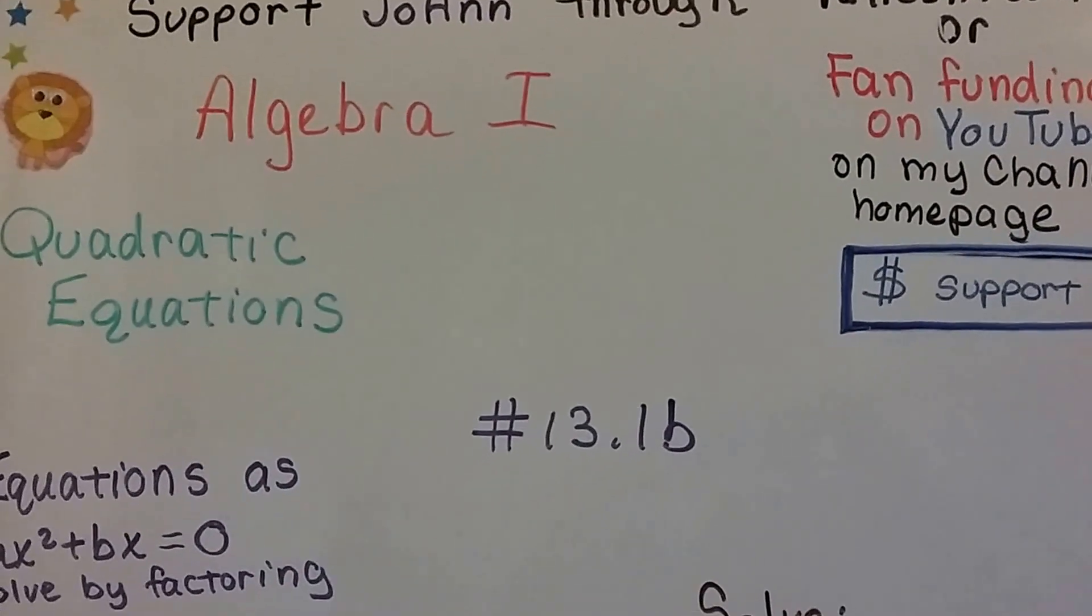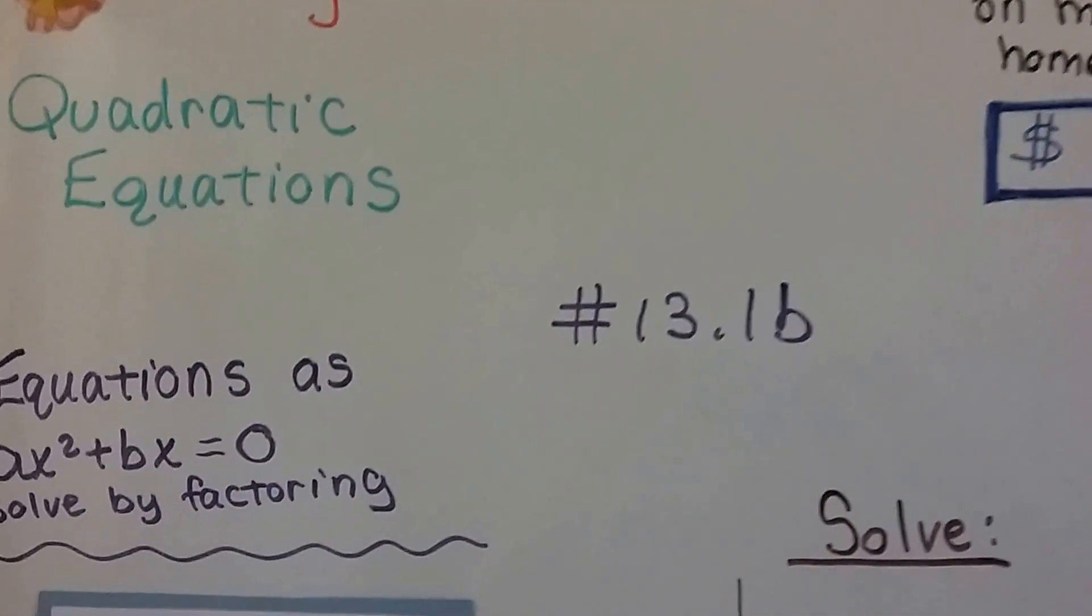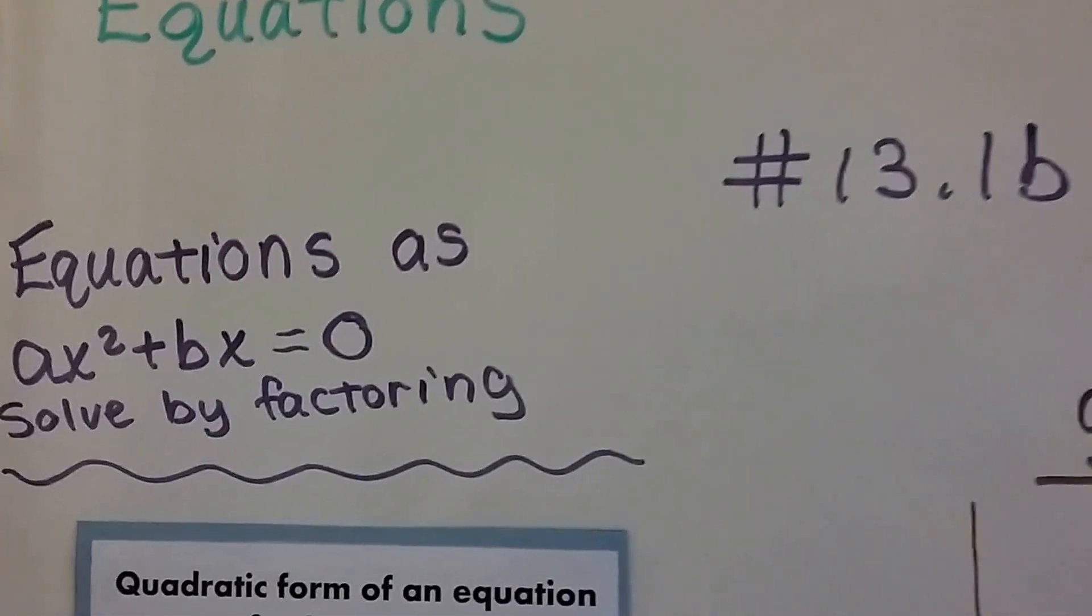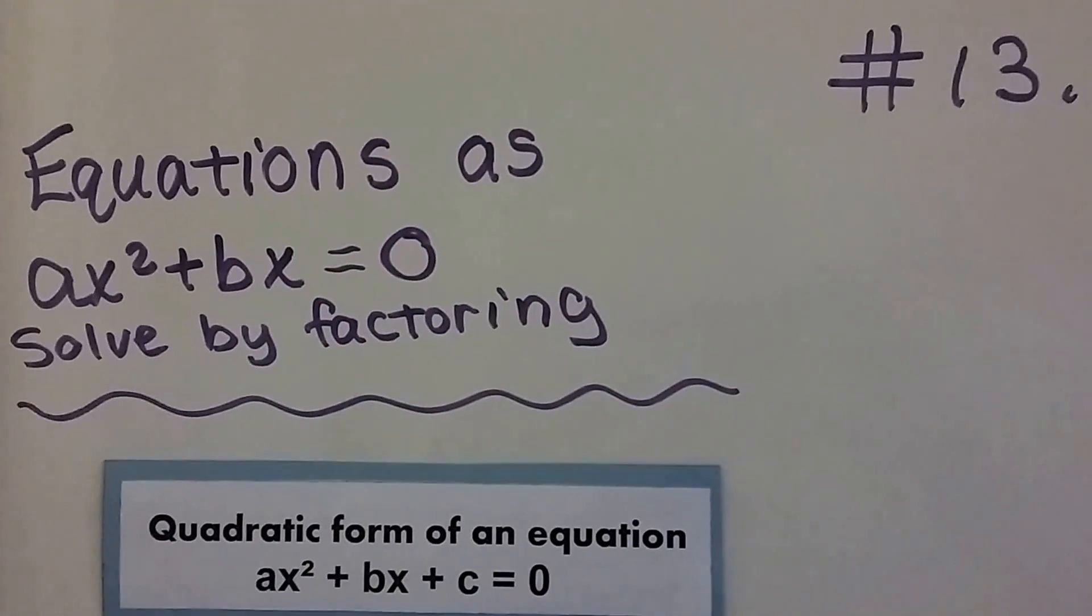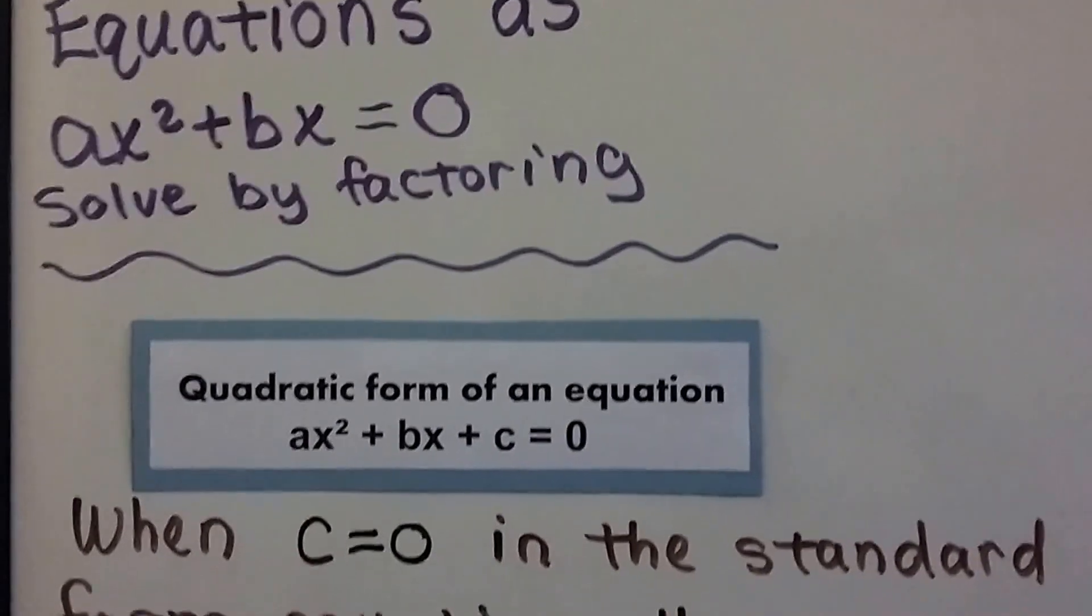Algebra 1, lesson 13.1b. We're going to talk about equations of the form ax squared plus bx equals zero, and we're going to solve by factoring.